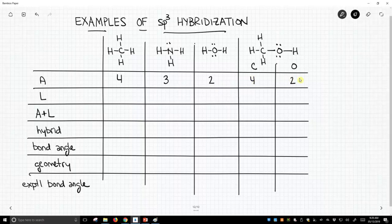So let's count the number of lone pairs. In methane, the carbon has zero lone pairs. In ammonia, we have one lone pair. The water oxygen has two lone pairs. And then methanol, the carbon has zero, and the oxygen has two. A plus L, for all these examples, equals four. Three plus one is four. Two plus two is four. Four plus zero is two plus two.